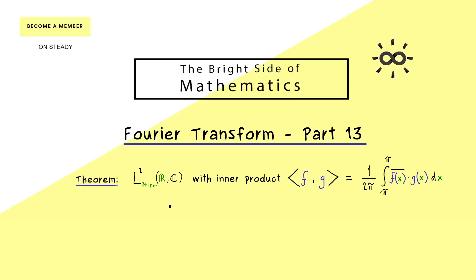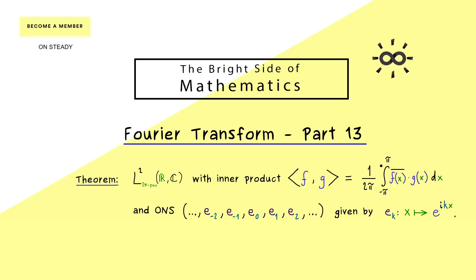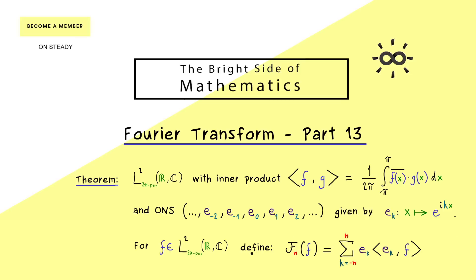As you already know, we consider functions that are square integrable and 2π-periodic. One possibility for the inner product is given by integrating from minus π to π and dividing by 2π. This implies that we have an orthonormal system when we consider the exponential functions. This is helpful because for each L2 function f we can define the Fourier series, where the inner product gives us the Fourier coefficient c_k.